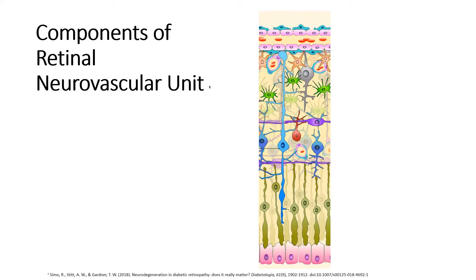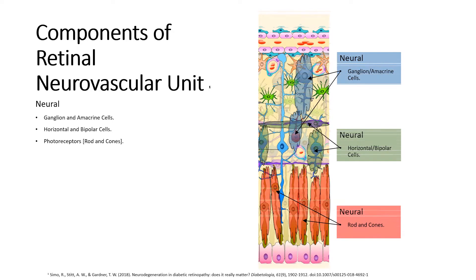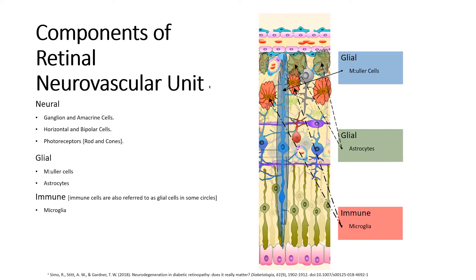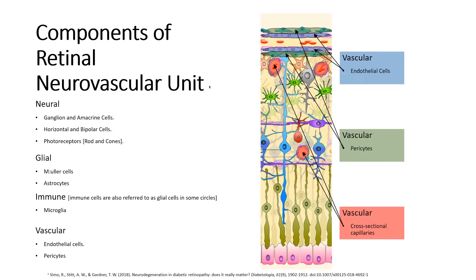This slide will identify the components of the neurovascular unit. The neural component is composed of the rods and cones, bipolar, horizontal, amacrine, and ganglion cells. The glial and immune cells include Müller cells, astrocytes, and microglia. The vascular network of arterioles and capillaries contains the endothelial cells, which are surrounded by the pericytes.